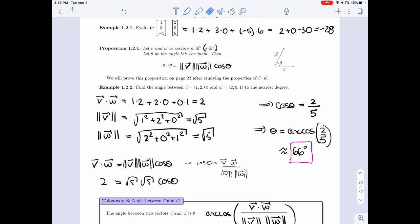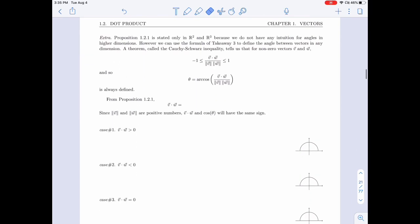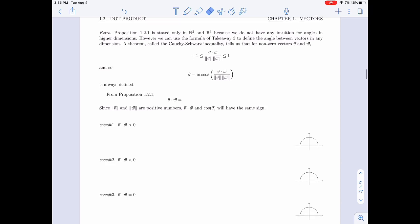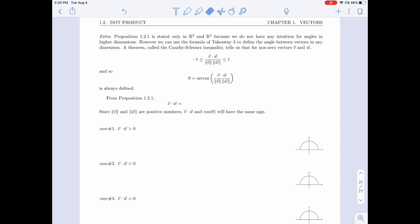All right, so now I just have another word. We talked about R2 and R3. Part of the reason we only talk about R2 and R3 in that proposition is because we don't have an intuition for what an angle is in R4, in R25, in R2015.